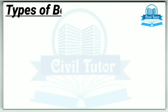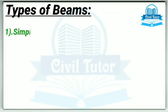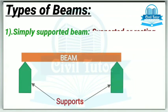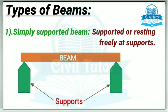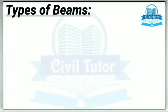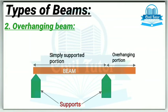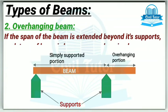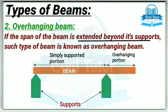The various types of beams are: The first one is simply supported beam. It's a type of beam which is supported or resting freely at supports. The second one is overhanging beam. If the span of the beam is extended beyond its supports, such type of beam is known as overhanging beam.